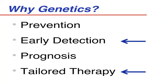Why would we want to know about the genetics of breast cancer? There's always a reason to look at mechanism to better understand disease. But in breast cancer and ovarian cancer, we hope that looking at genetics will help us with prevention, early detection, being able to better predict the course of disease, and tailored therapy. Today, I'm actually going to focus on advances brought on by genetics in early detection and tailored therapy.